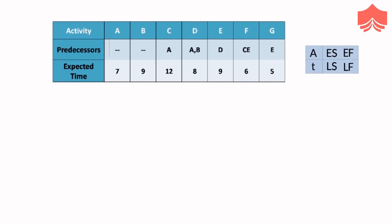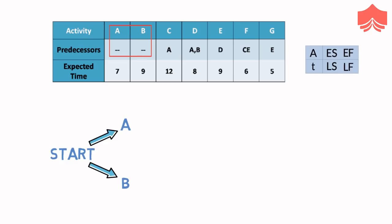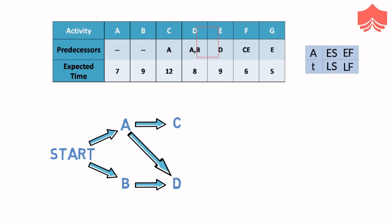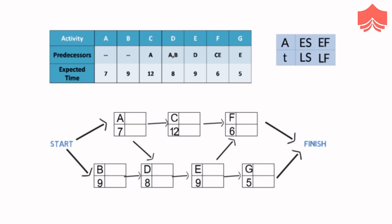Suppose activity A and B are without any predecessors, therefore these activities can begin at the start of the project. Activity C needs A to be complete before it can start. D requires both A and B to be completed. E needs D to be completed. F needs both C and E to be completed, and G requires E to finish first. Since there are no activities after F and G, both of them can go to the finish. This is how the network will look with activity nodes.